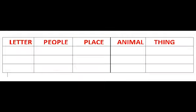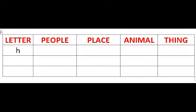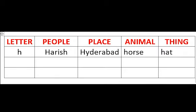Now let us play a language game on naming words in which you have to write the names of people, place, animal and thing with the letter I call out. The first letter is H. For example, under people: Harish, place: Hyderabad, animal: horse, thing: hat.